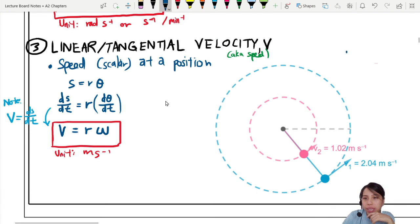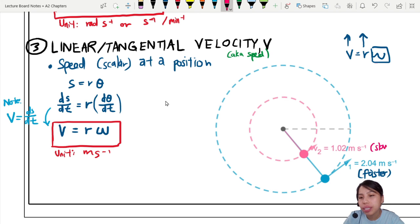So we want to use the equation to understand. V equals to R omega. If I set omega to be constant for both of them, means the one that has a larger radius will have a larger tangential velocity because we need to move faster to keep up with the change in angle. So this one you can see here is faster. The pink color one, slower in speed. The V is slower, V is faster.